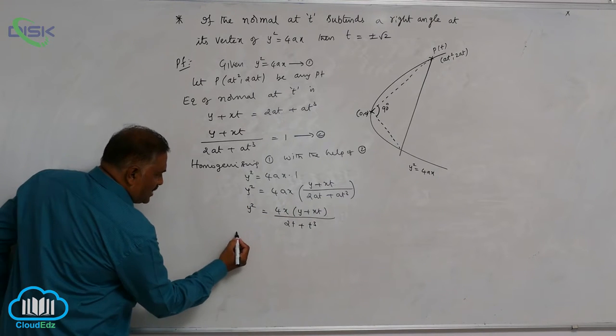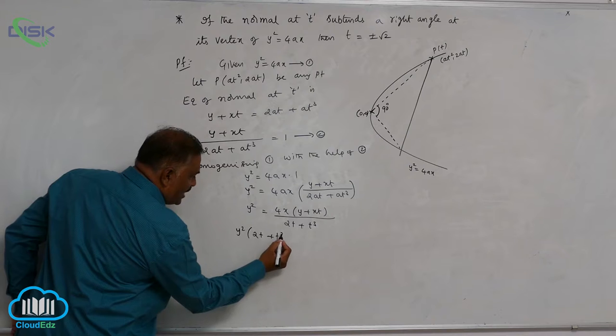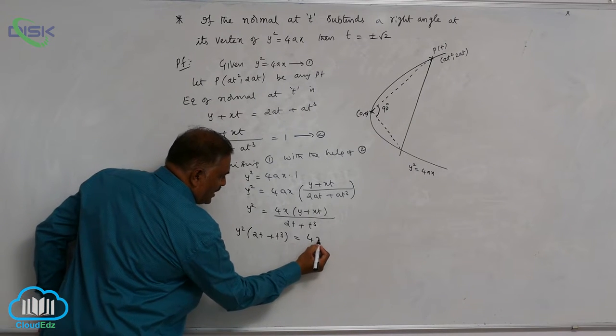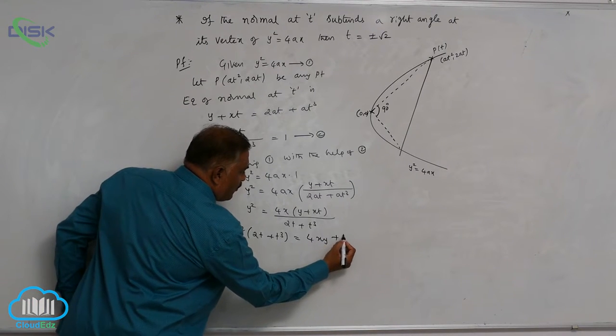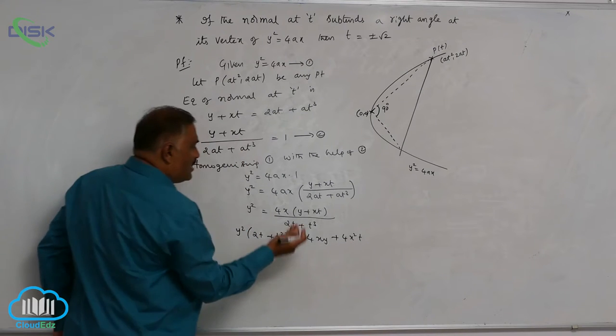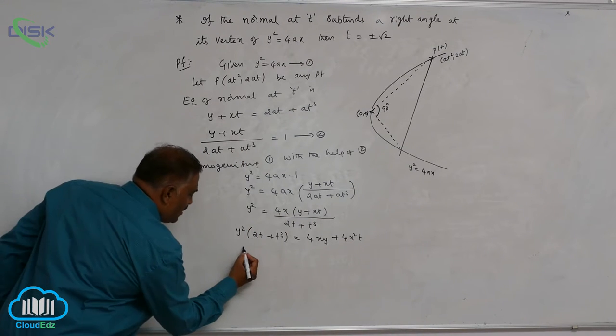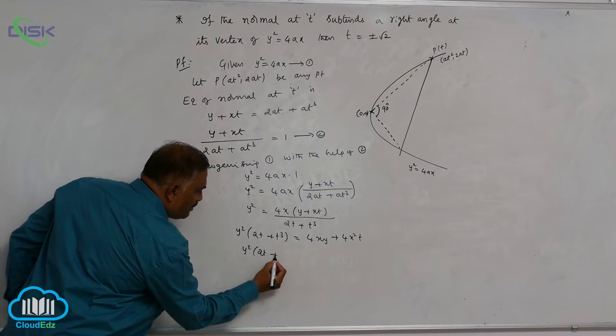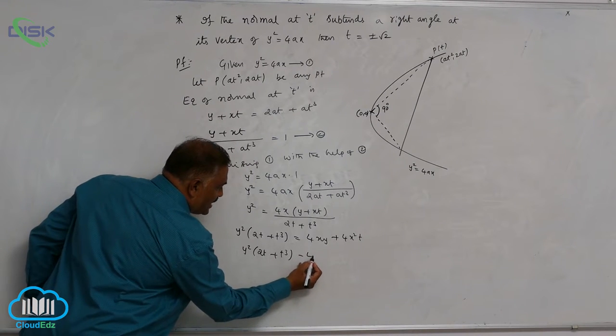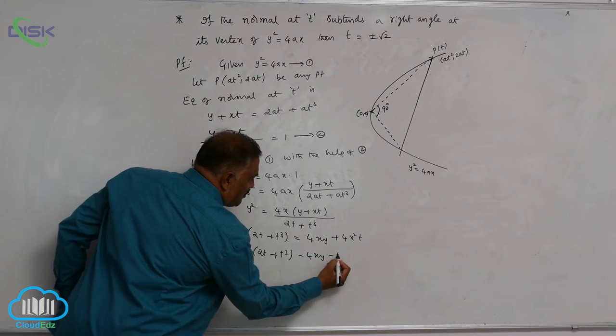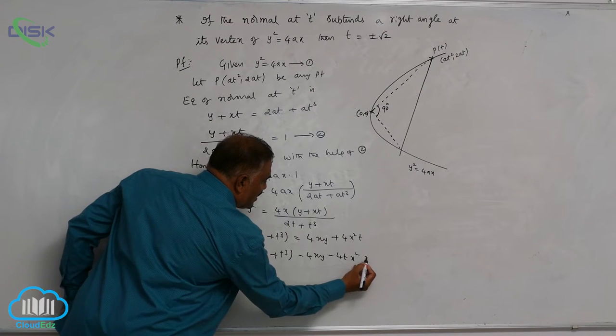Cross multiplication, y square into 2t plus t cubed is equal to 4xy plus 4x square t. Bring all the terms to one side. y square into 2t plus t cubed minus 4xy minus 4tx square equal to 0.